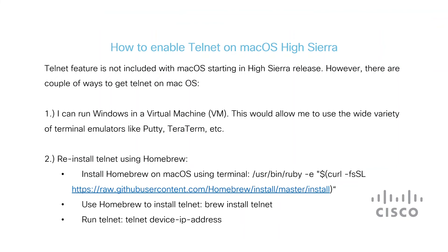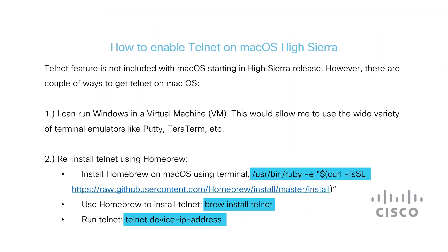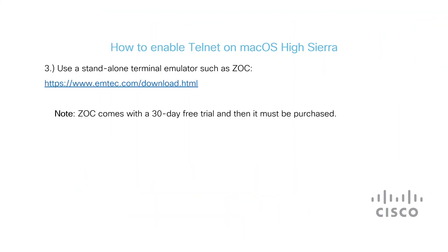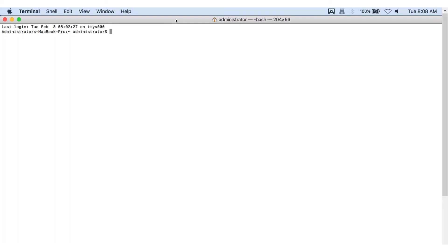The first option is to run Windows on a virtual machine, which would allow you to use a wide variety of terminal emulators like PuTTY, TeraTerm, and others. The second way is to reinstall Telnet using the Homebrew option — details shown here. The third choice is to use a standalone terminal emulator such as ZOC, which has a 30-day free trial period. For this example, I have used the second option of reinstalling Telnet using Homebrew.